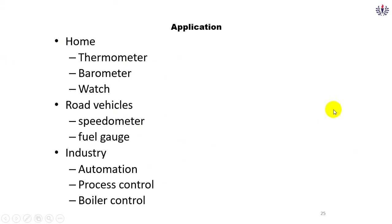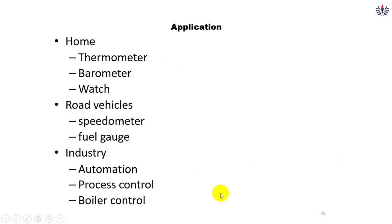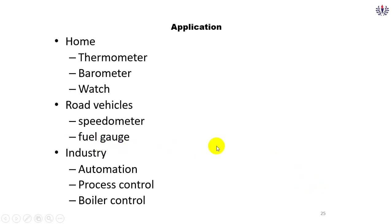Measurement and instrumentation are applied in the home — for example, a thermometer, a barometer, and watching the time. On roads and vehicles, you can see the speedometer, which measures speed, and the fuel gauge, which measures the volume of fuel — whether it is full, half, or at reserve.